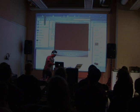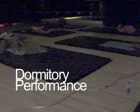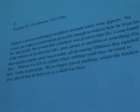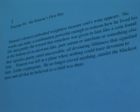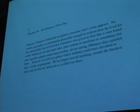Track date number four. On Simeone's first day. Simeone's dearest embodied weightless treasure — so wine appears. No words can make a combination powerful enough to redeem how he lived his life and gratify the reward that somehow was given to him. Like a coin found at the bottom of an unswung lake — pure aurum, or something else that signifies purity — inaccessible, all the devouring filthiness that signified him. Simeone was left in a plain where nothing can trace devotion to him. He no longer craved anything, amidst the blackest trees and all that he believed as a child.